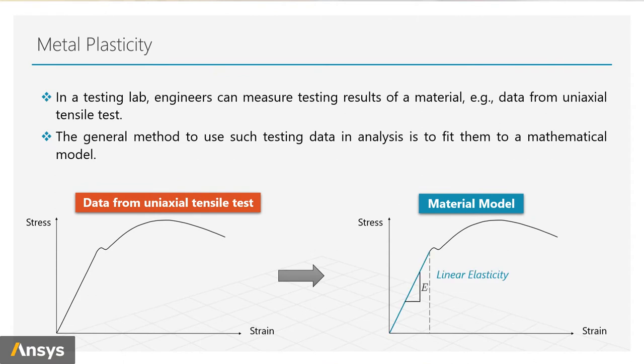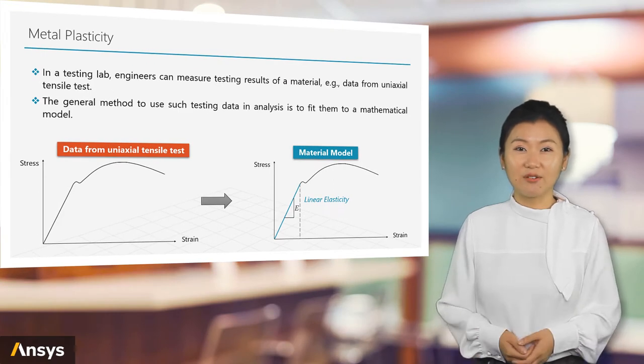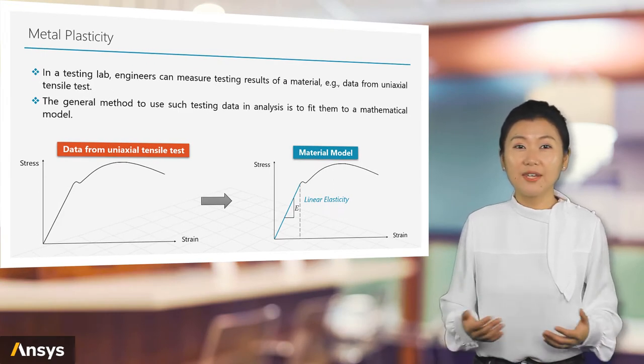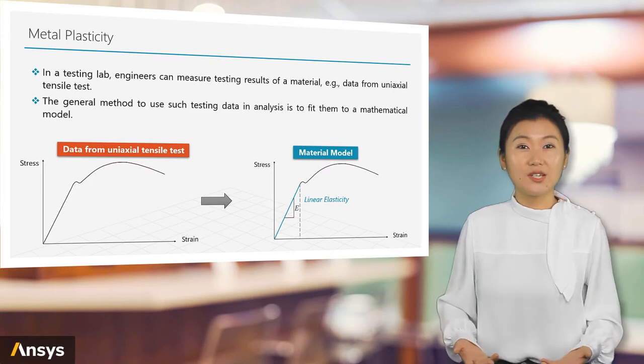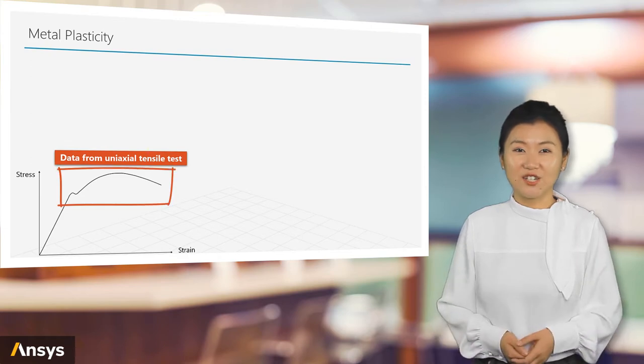In a certain range, if the relationship between stress and strain is almost a straight line, then the material can be modeled as linear elasticity inside that range. In this case, the material's behavior in uniaxial direction can be captured by the tangent of the straight line, which is the Young's modulus in linear elasticity. But how about the range beyond linear elasticity?